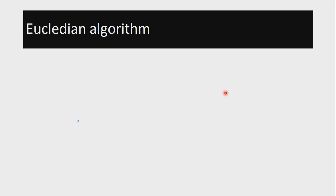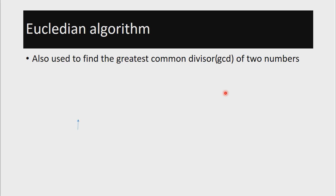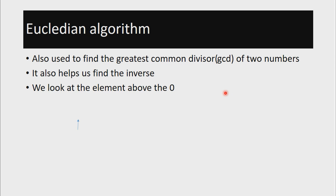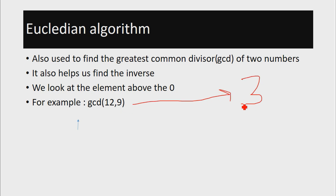Let's proceed to look at the actual Euclidean algorithm. It is used to find the greatest common divisor — in short, GCD — of two numbers, and we'll also illustrate how to use it to find the inverse. In this example, let us find the GCD of 12 and 9. Just by looking at it, we can already tell that the GCD of 12 and 9 is 3, because 3 is the largest integer that divides into 12 and also into 9 without a remainder.